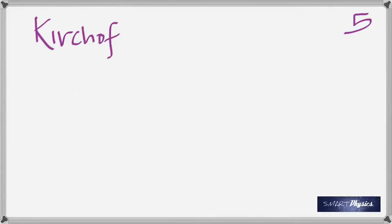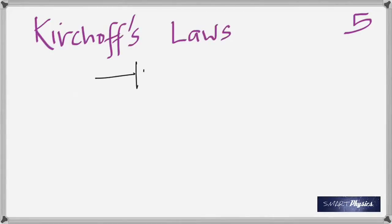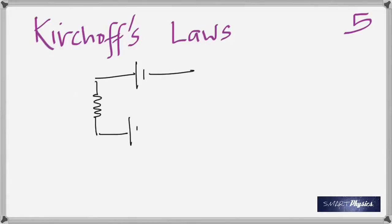Topic five is Kirchhoff's laws — KCL (Kirchhoff's Current Law) and KVL (Kirchhoff's Voltage Law). I'm demonstrating both with a circuit. Label the resistances and assume EMF values: say 5 volts, 3 volts, and 2 volts.